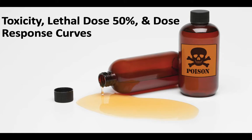Hi folks and welcome to the last lecture video for unit 8 on aquatic and terrestrial pollution. Today we're going to talk about toxicity, the lethal dose of different toxins, and dose-response curves. This has a lot to do with the variety of different pollutants we've talked about over the past two units, everything from ozone all the way up to mercury and lead. All of those things have different levels of toxicity and can be lethal at different dosages.